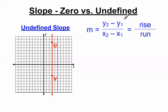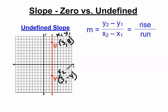Now let's talk about undefined — this is the one where a lot of people get confused. Let me explain mathematically how we get undefined, or the impossible slope. I've got two points here on a vertical line going straight up and down — notice there's no movement in the x direction, only in the y direction. Point V is at three, comma, negative four. Point U is at three, comma, eight. I'll label these x1, y1 and x2, y2 and plug them into the slope formula.